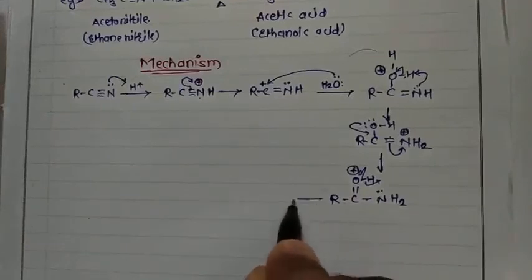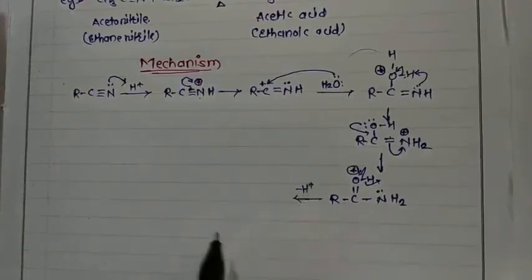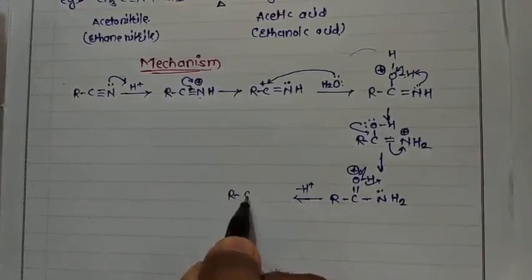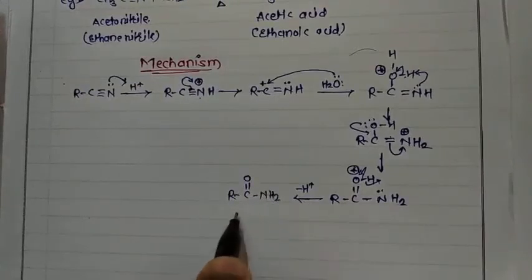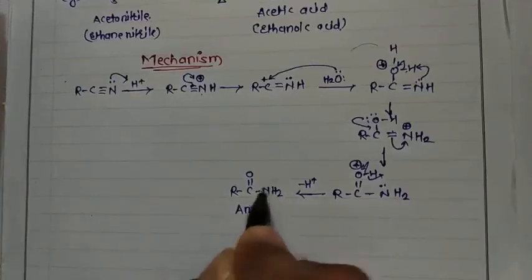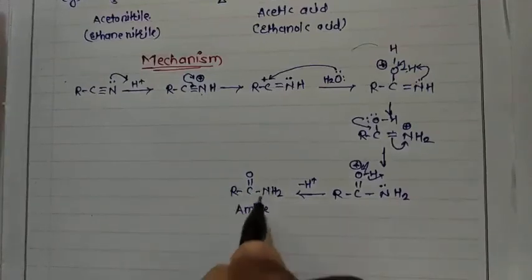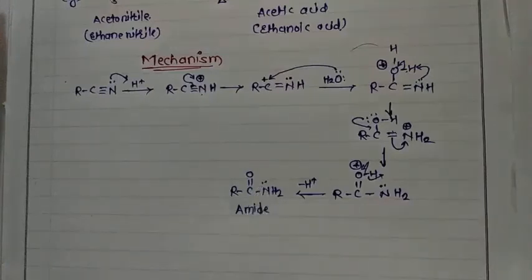After loss of H⁺, the product is the amide: R–C(=O)–NH₂.